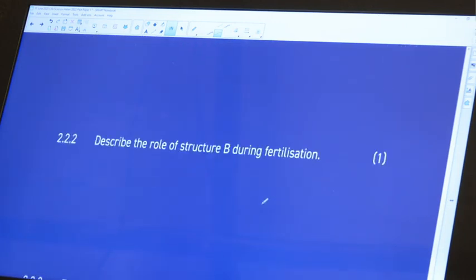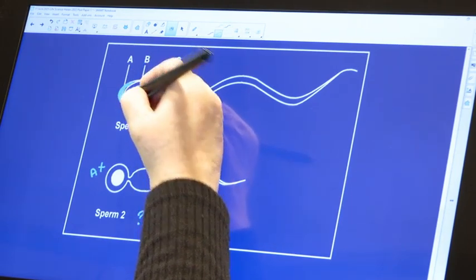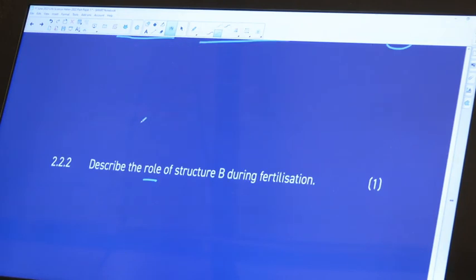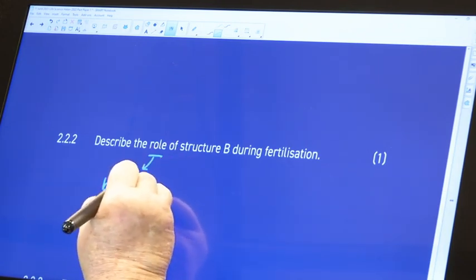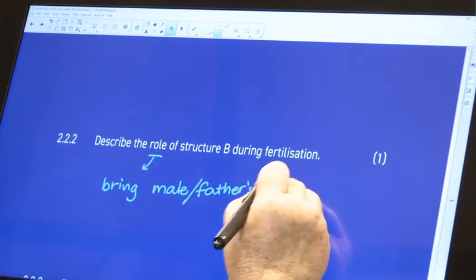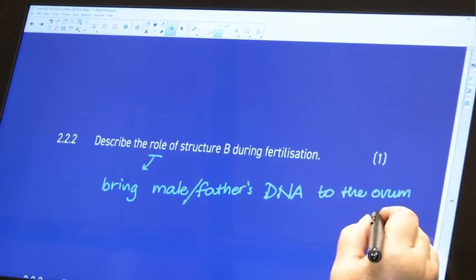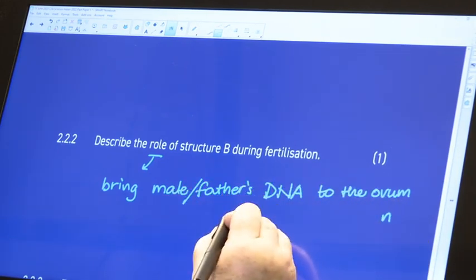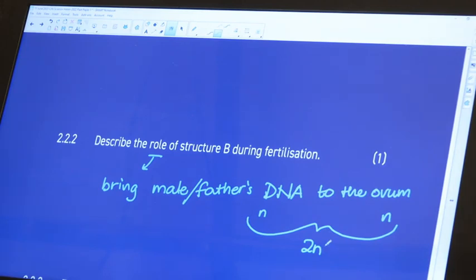2.2.2. Now we have to talk about a role or a function of structure B during fertilization. And here is structure B. And structure B is the nucleus. What is the role of the nucleus? The nucleus from the sperm cell is going to bring the male or the father's DNA to the ovum. Because remember, the ovum is haploid. The sperm cell is haploid. And on fertilization, we're going to make a diploid zygote.